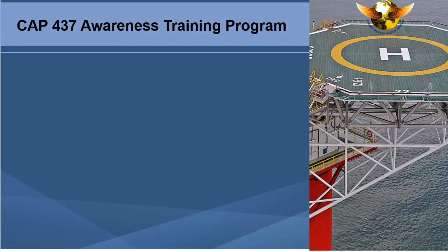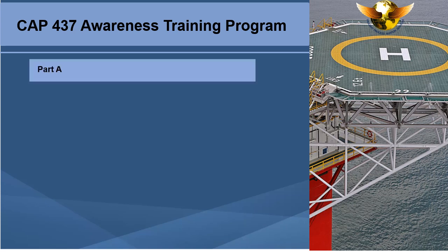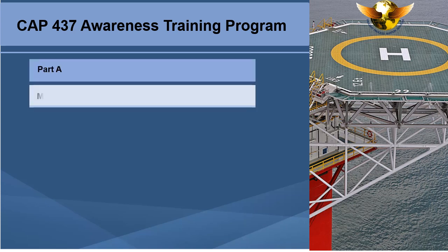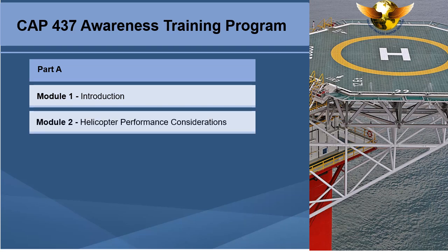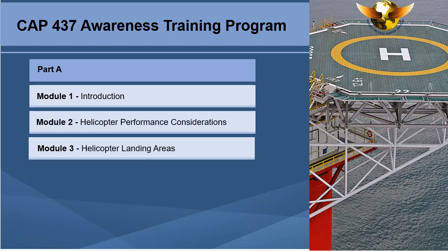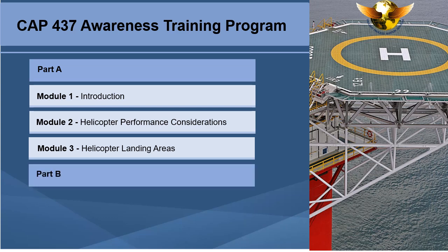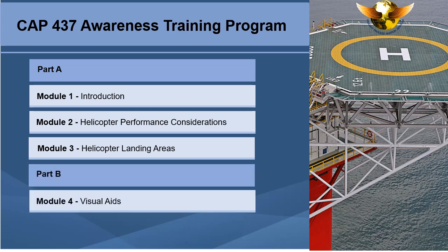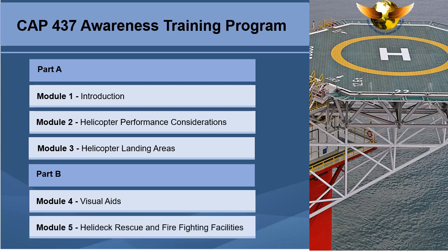This training program consists of five modules and will be presented in two parts. Part A covers Module 1: Introduction; Module 2: Helicopter Performance Considerations; and Module 3: Helicopter Landing Areas. Part B covers Module 4: Visual Aids; and Module 5: Helideck Rescue and Firefighting Facilities.